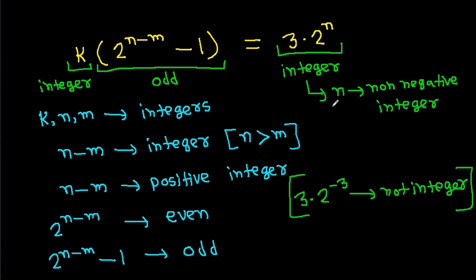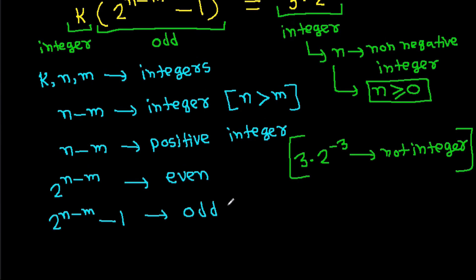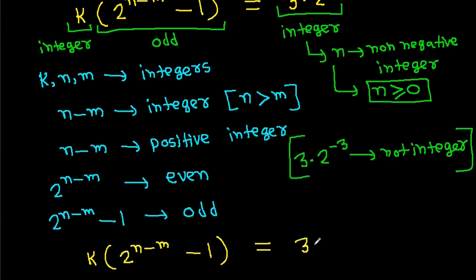From here, we get n is greater than or equal to 0. The key equation is k times (2^(n-m) minus 1) equals 3 times 2^n, with n a non-negative integer and n greater than m.